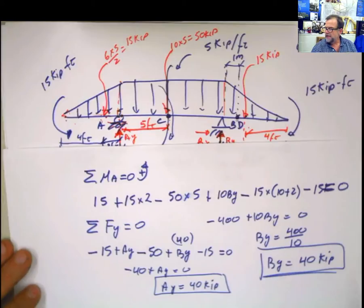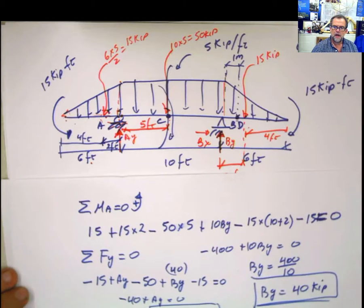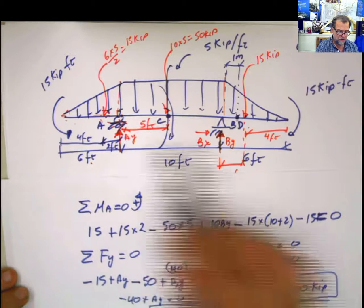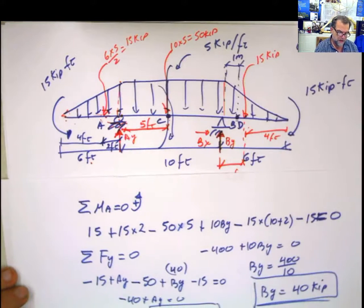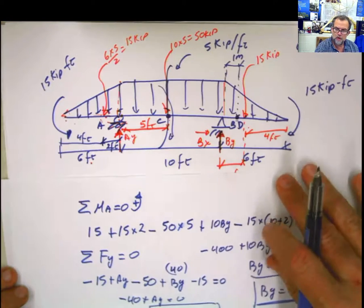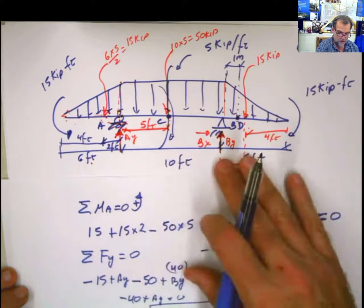And then we could just know that this is 40 because the total vertical load coming down was 80. But anyway, you reviewed this part of the problem when we calculated those values. And now let's continue.